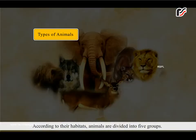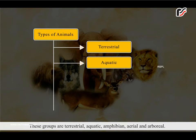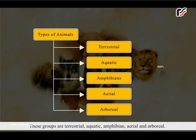According to their habitats, animals are divided into five groups. These groups are terrestrial, aquatic, amphibian, aerial and arboreal. Let us understand adaptation to environment by studying these groups.